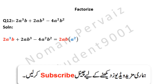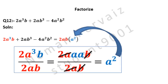Now look at the first term. Since 2ab is common, a² will be left only. Since 2ab is common, we divide 2a³b by 2ab. Here 2 is written as it is, a³ is written as a × a × a, and b is written as it is. Then 2, a, and b are cancelled with 2, a, and b, and only a² will be left behind. This a² is taken to our solution.